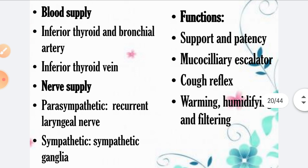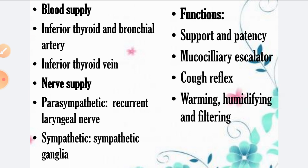Regarding blood supply: the inferior thyroid and bronchial arteries supply blood, and venous drainage occurs through the inferior thyroid vein. For nerve supply, the parasympathetic supply is through the recurrent laryngeal nerve, and the sympathetic supply is through the sympathetic ganglia.